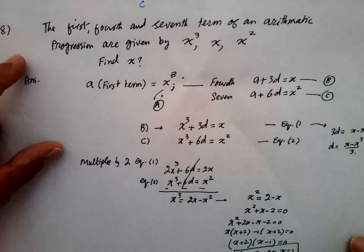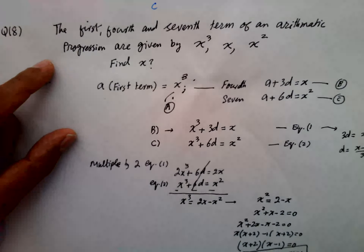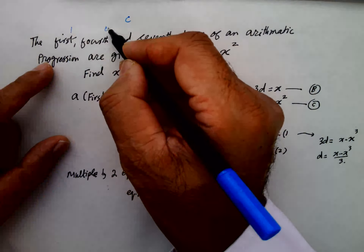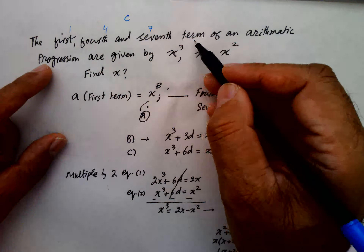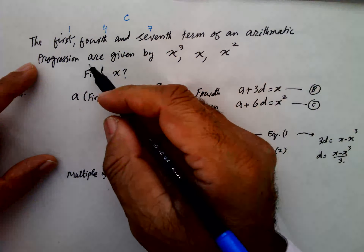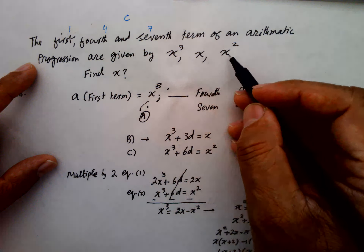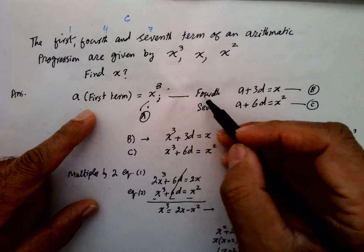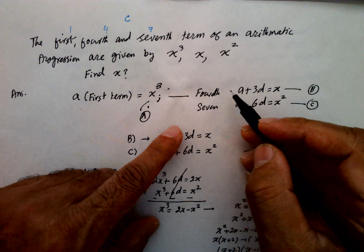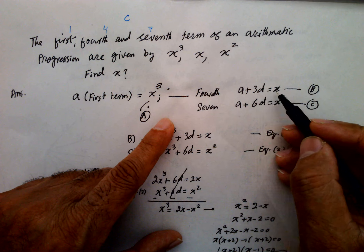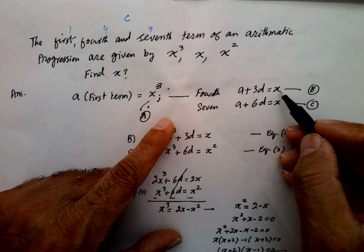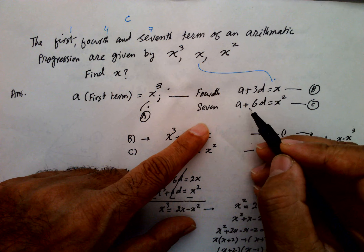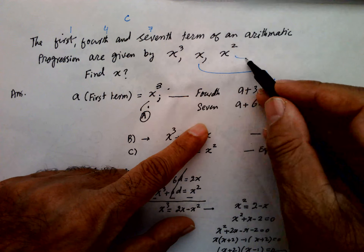Question number 8. The 1st, 4th, and 7th terms of an arithmetic progression are given by X cubed, X, and X squared. Find X. The 1st term A equals X cubed. The 4th term: A plus 3D equals X. And the 7th term: A plus 6D equals X squared.